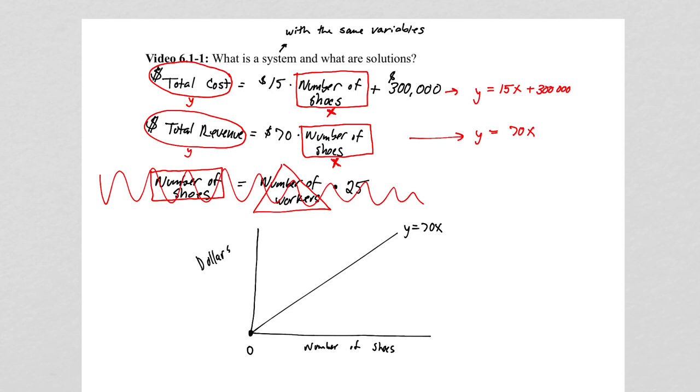Then our other equation, 15x plus 300,000. So, it's going to be a lot less steep. The slope is not nearly as high as 70. So, it's going to be less steep. But it's not going to go through the origin. It's going to, we'll say this is at 300,000. And it's going to go something like that. And I'm just big time eyeballing this.